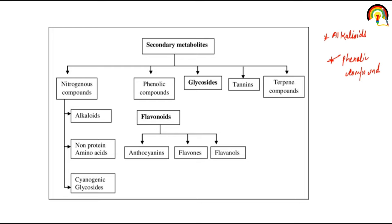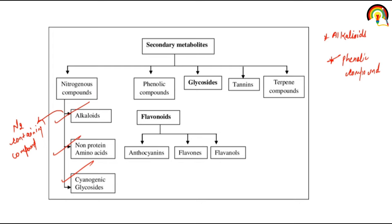Secondary metabolites consist of nitrogenous (nitrogen-containing) compounds like alkaloids, non-protein amino acids, and cyanogenic glycosides. Phenolic acids are OH-containing compounds that include flavonoids such as anthocyanins, flavones, and flavonoids. Glycosides consist of glycone (carbohydrate) and non-carbohydrate moieties, including cyanogenic glycosides. Other secondary metabolites include tannins and terpenoid compounds, such as isoprenoid compounds like geranyl diphosphate and farnesyl diphosphate.